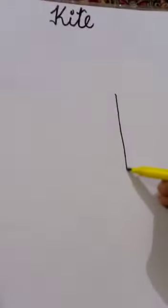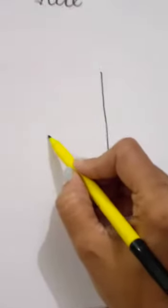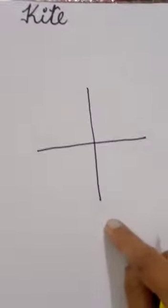So, let us learn how to draw a kite. For this my dear students, sabse pehle hum ye ek standing line lagayenge. Uske baad we will draw a sleeping line from the center of this standing line.